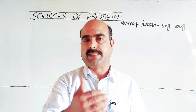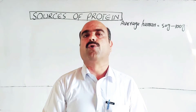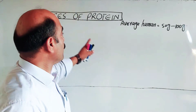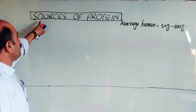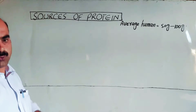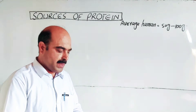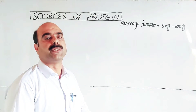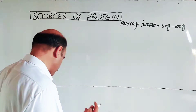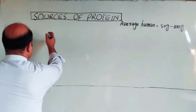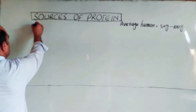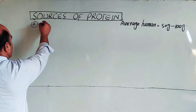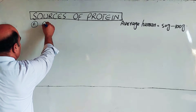In terms of the food we consume, there are two fundamental sources of protein. These are: animal sources and plant sources. These are the two main sources from which our body obtains proteins.